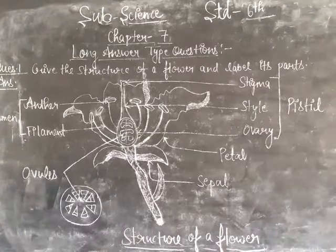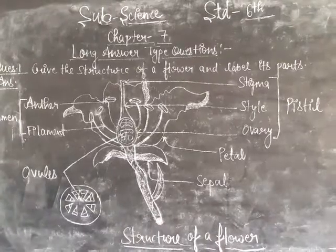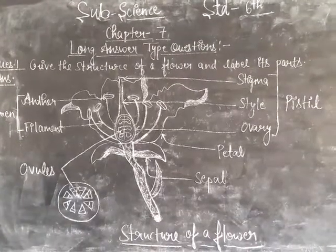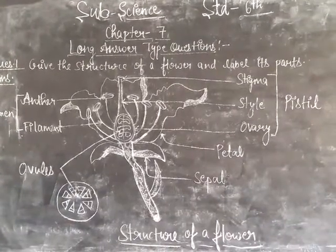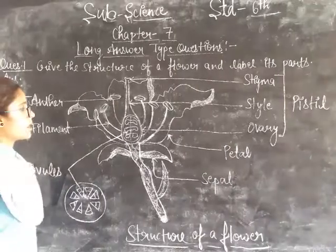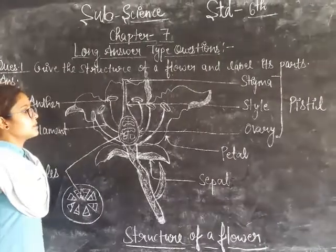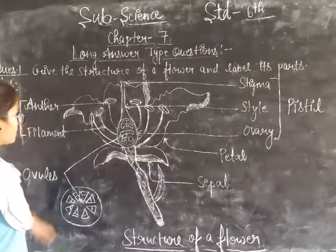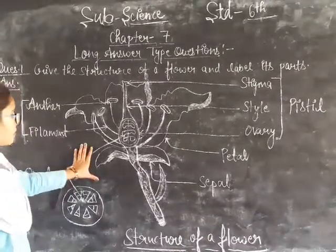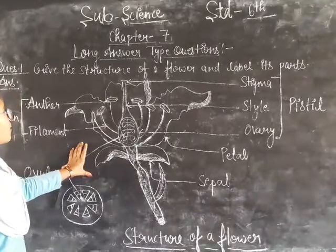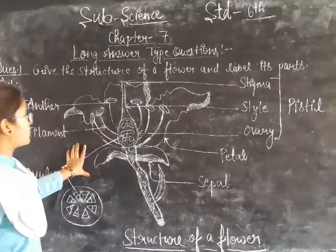Question number first: give the structure of a flower and label its parts. You can make a flower structure and label its parts. Here I have a flower structure with labeled parts.